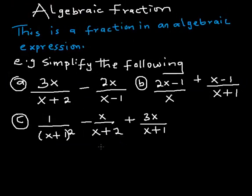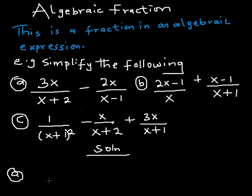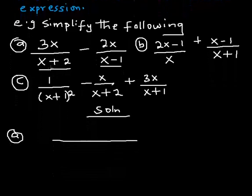We simplify by taking the LCM of the denominators. Now we have a question: simplify the following fractions. Starting with part (a) of the question — to simplify these two fractions, I will draw my division sign, then find the LCM of the denominators. In algebraic fractions, to get the LCM of the denominators we simply multiply the denominators together.